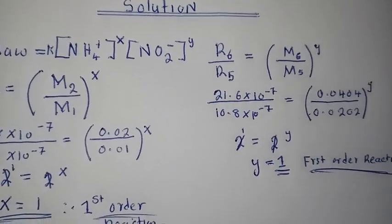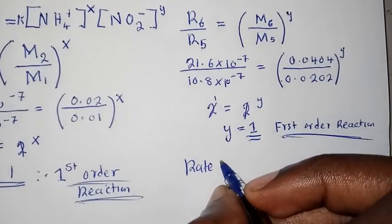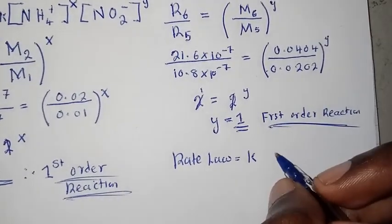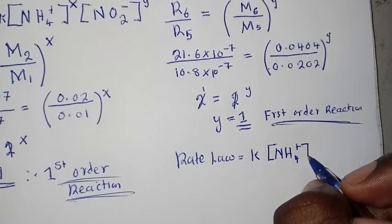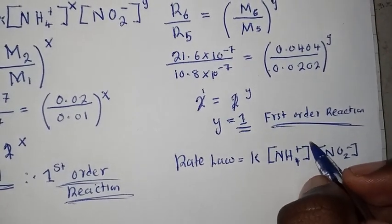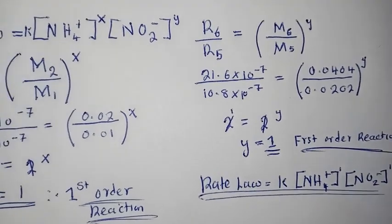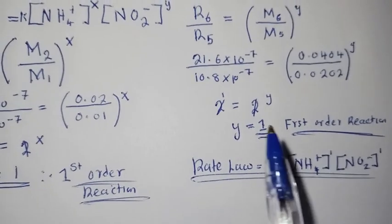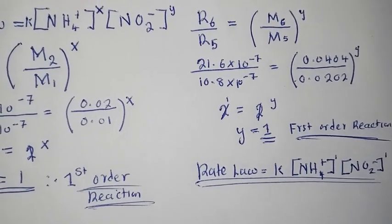So for the rate law, it is simply: rate = K[NH₄⁺][NO₂]. There is a power of 1 on both the ammonium ions and the nitrogen dioxide, so we don't write the ones explicitly. If the order had been second order, we would have put a 2 instead. That's just how the rate law works.